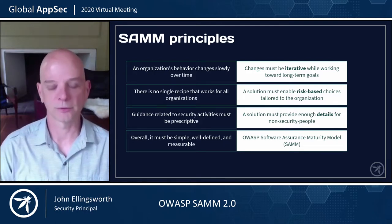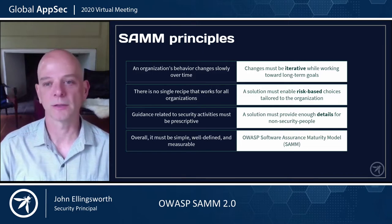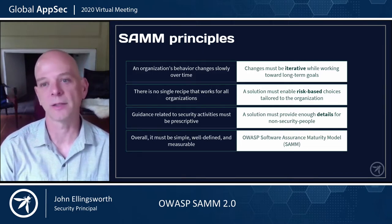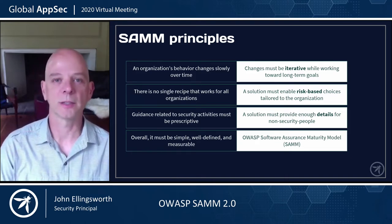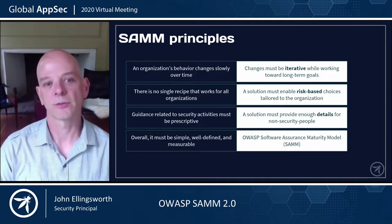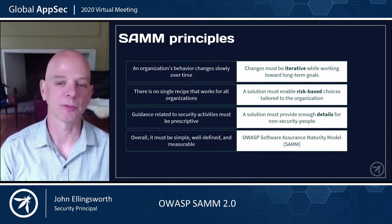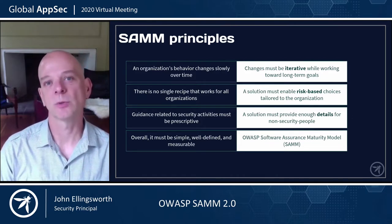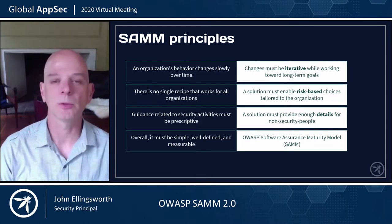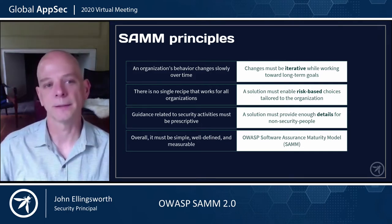There are four guiding principles for the software assurance maturity model. First, organizational behavior changes slowly over time — there's no reason to try and boil the ocean all at once. Changes are intended to be iterative, working toward a long-term goal. Second, there's no single recipe that works for all organizations; the solution must be risk-based. Third, guidance related to security activities must be prescriptive enough for non-security people to understand what needs to be done and achieve buy-in. And overall, it must be simple, well-defined, and measurable.